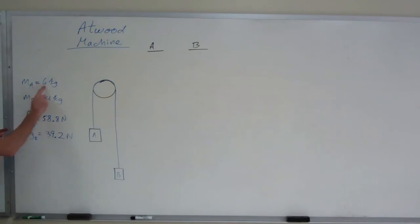Block A has a mass of 6 kilograms, which is a weight of 58.8 newtons. Remember, multiply mass times 9.8. Block B has a mass of 4 kilograms, which is a weight of 39.2 newtons. It's the fact that these two numbers are different. That's why it accelerates.